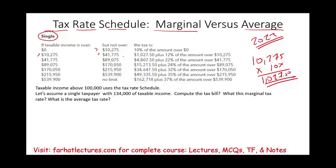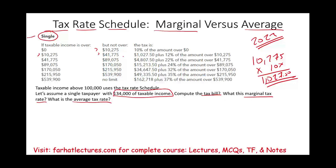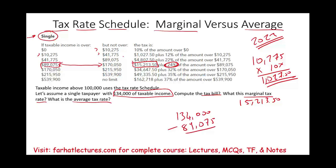Let's assume you are single with a taxable income of $134,000. We're going to compute the tax bill, determine the marginal tax rate, and determine the average tax rate. With $134,000, you go to the bracket where this number falls — using a single individual, it falls in the 24% bracket. Your taxes will be $15,213.50 plus 24% of the amount above $89,075. Let's compute: $134,000 minus $89,075.